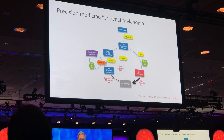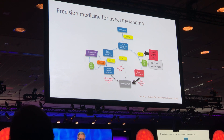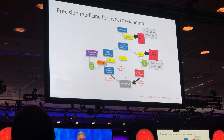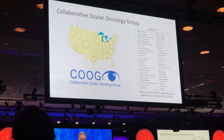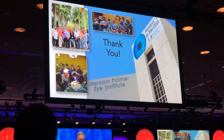In summary, precision medicine in uveal melanoma really requires an understanding of the mutations that drive the cancer. We just talked about BAP1 and HDAC4 inhibition in particular, and epigenetic modulators in general. There are other mutations that can be targeted — the GNAQ family mutations and the SF3B1 mutations, perhaps with immunotherapy. I want to acknowledge the collaborative ocular oncology group across the country and Canada that are participating in prospective studies that have validated the gene expression profile and are validating future biomarkers as well. Thank you.